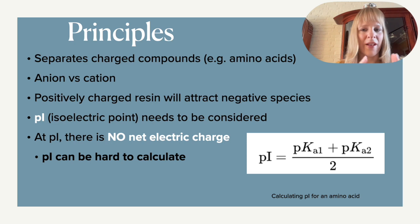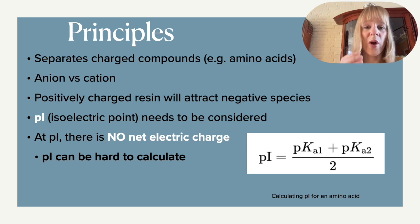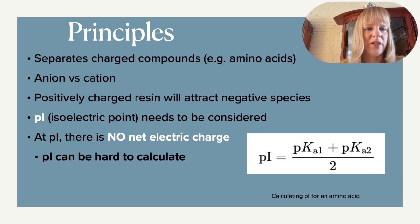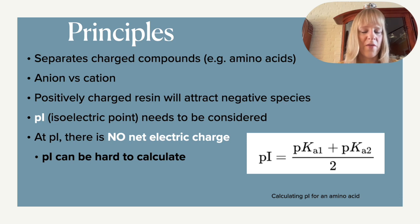Now let's look at the principles behind ion exchange chromatography. The separation is based on charge, so you will need to separate out charged compounds. A lot of amino acids and proteins used in the pharmaceutical industry do have charges, which helps. You can do this both ways — you have both anion and cation chromatography. If your column resin is negatively charged, it will capture the cations; if the resin is positively charged, it will capture the anions.